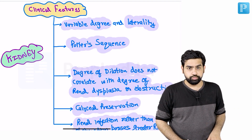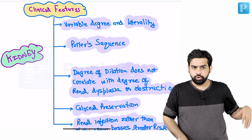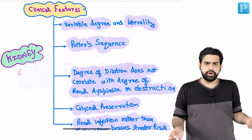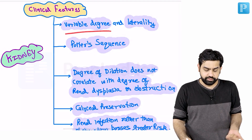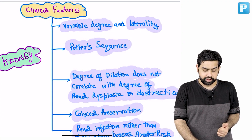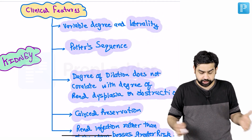Let's talk about the clinical features of Prune Belly Syndrome. Starting with the kidney, there are variable degrees and laterality — every patient may not have similar findings. Some might have more hydronephrosis, some might have less, and sometimes only one kidney is affected. This variability in degree and laterality is what you need to understand.